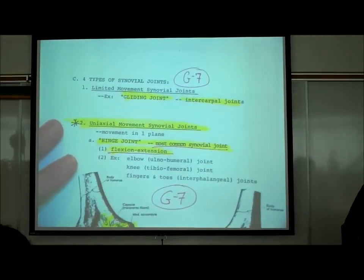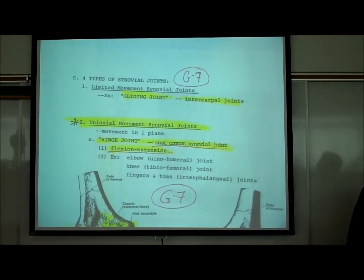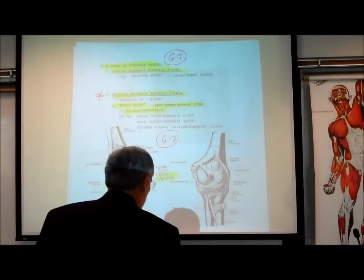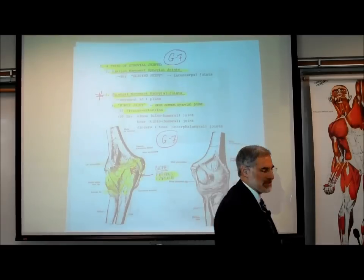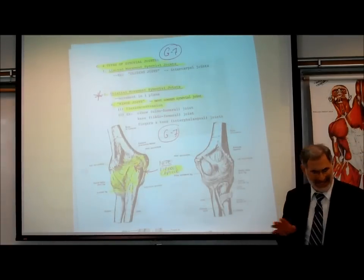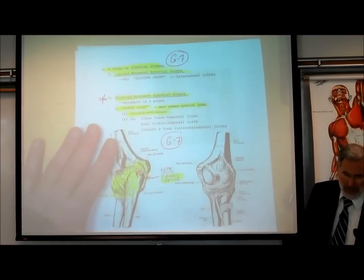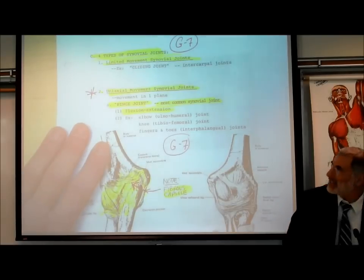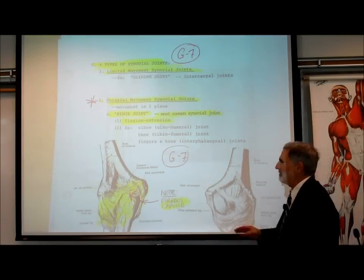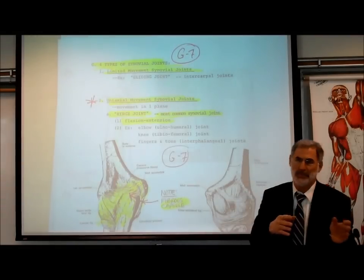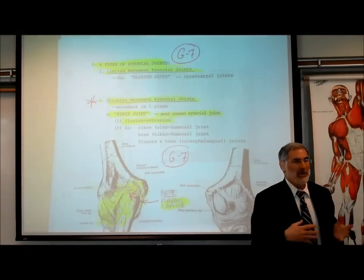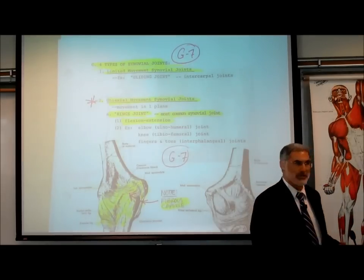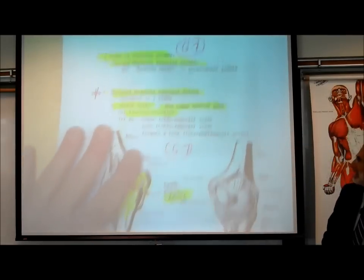Beginning on page G7 are four types of synovial joints. The first type, mentioned last time, is the least important: the limited movement synovial joint. It means exactly what it says — it may be a synovial joint, but there's not a lot of movement permitted between the two bones. We find this between the carpal bones of the wrist and between the tarsal bones of the ankle.